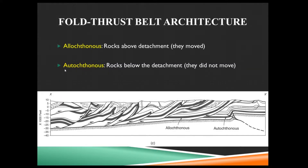So this brings us to allochthonous, which is rock above the detachment — it's the stuff that moved, the stuff that rode up over something else. And autochthonous is rock below the detachment. It didn't move. It was there all along — automatically there no matter what.